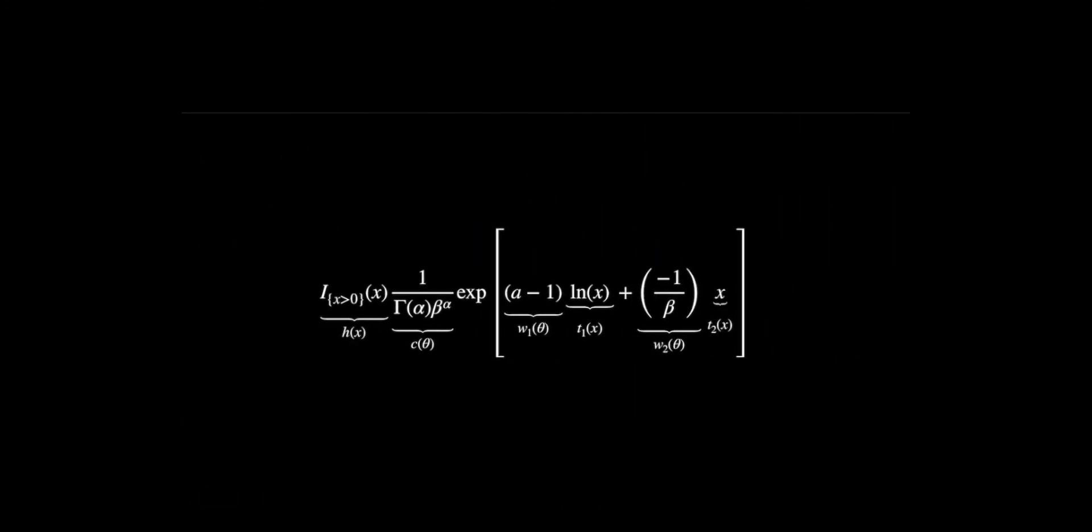If we do this on the next page, this is the final form of the answer. The only thing new here is that we didn't really have an H of X out front, but we're able to solve that problem by just making an indicator variable. This is just a different way of specifying that X must be greater than zero. Now we see that we have all the parts: a function of X times a function of the parameters times the exponential of a parameter function times an X function plus a parameter function times an X function. By doing this, we've shown that the gamma function is an exponential family.